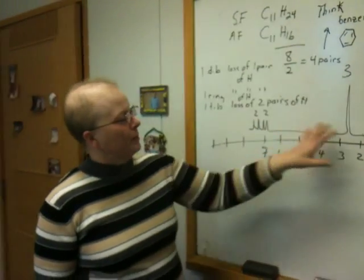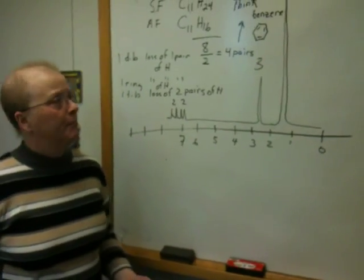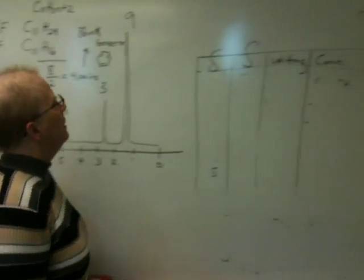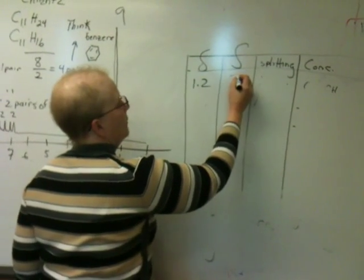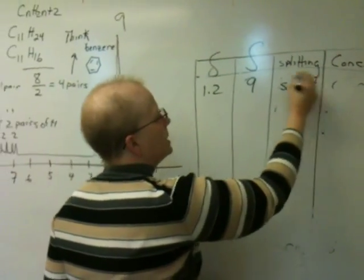So, we're going to interpret this NMR spectrum, which is pretty fundamental, but it's different than anything you've seen. First thing we do, fill in the chart. The first peak is at about 1.2. It has an area of 9. It is a singlet. What is the conclusion?